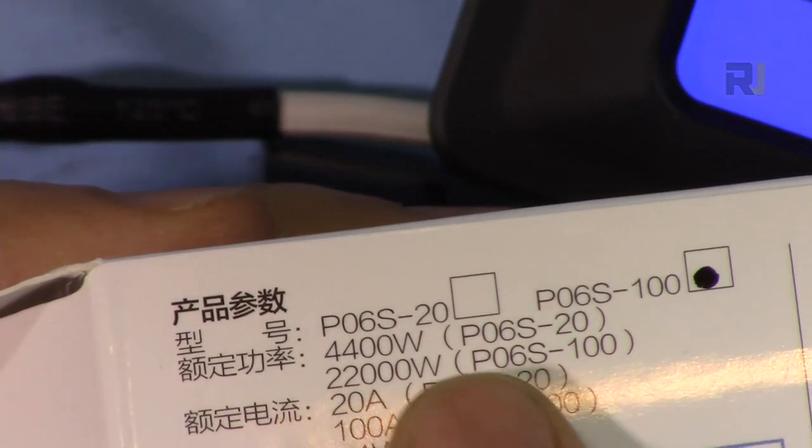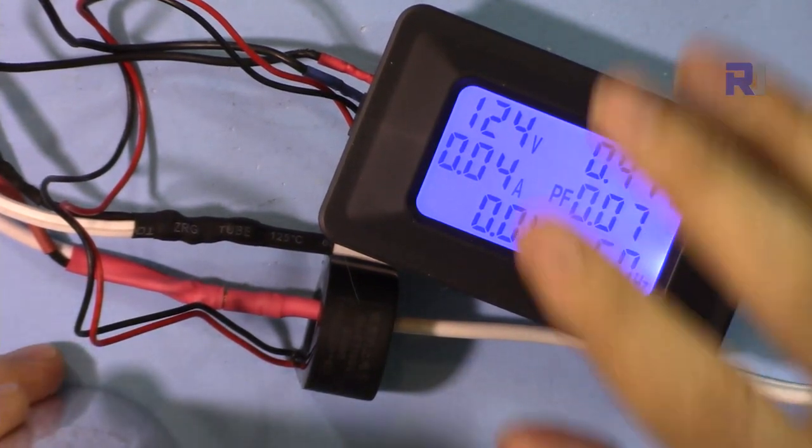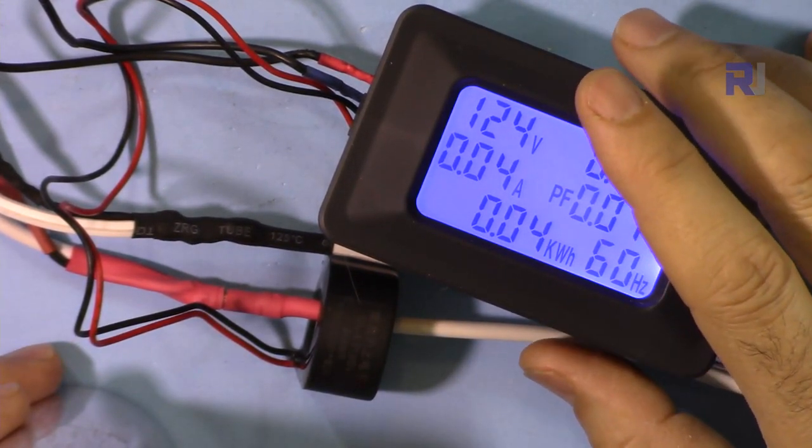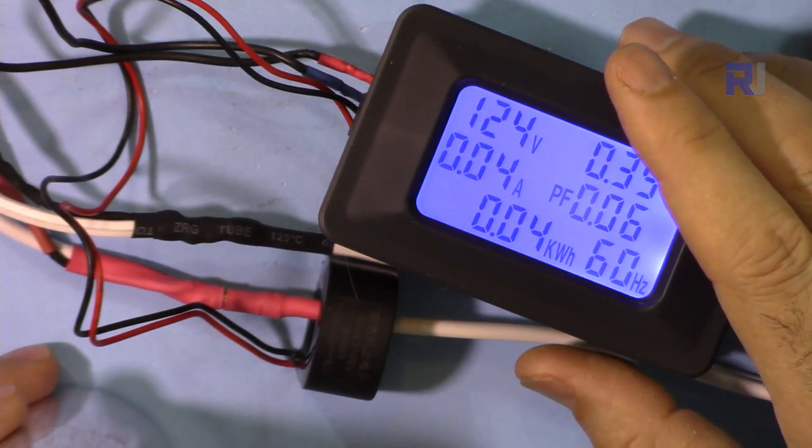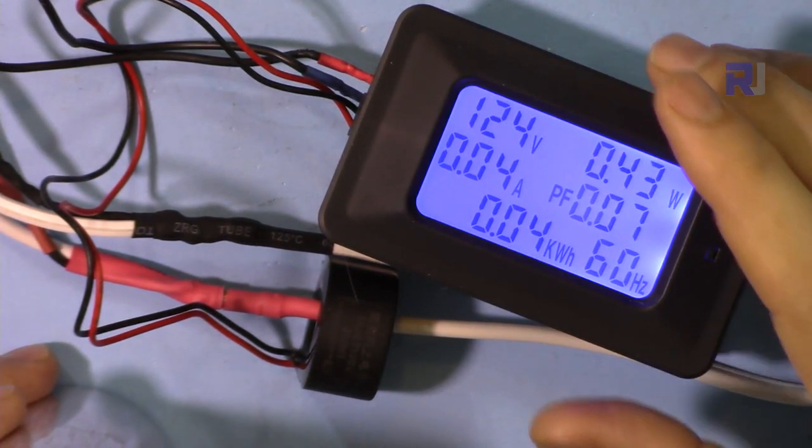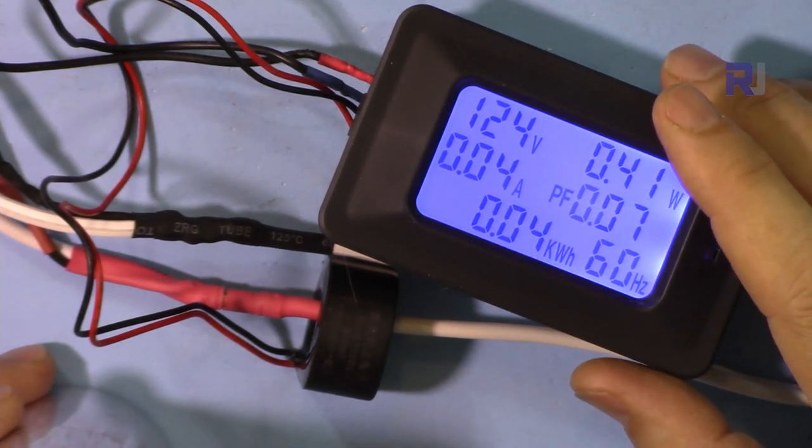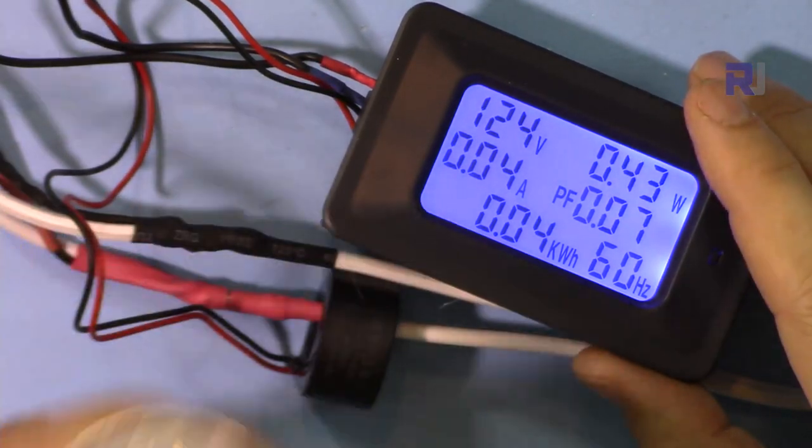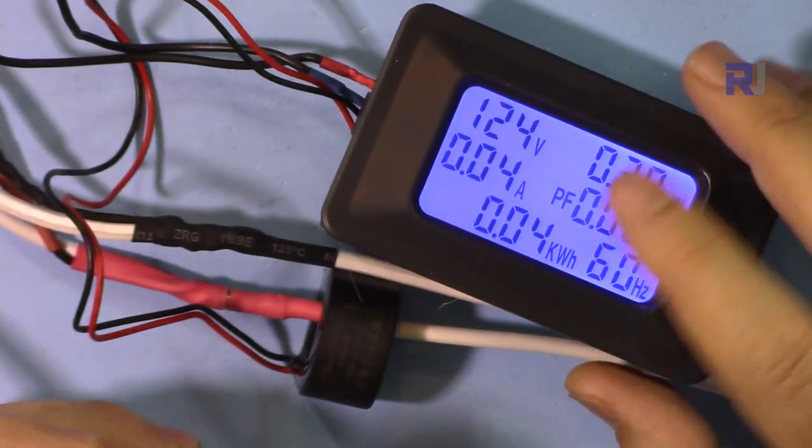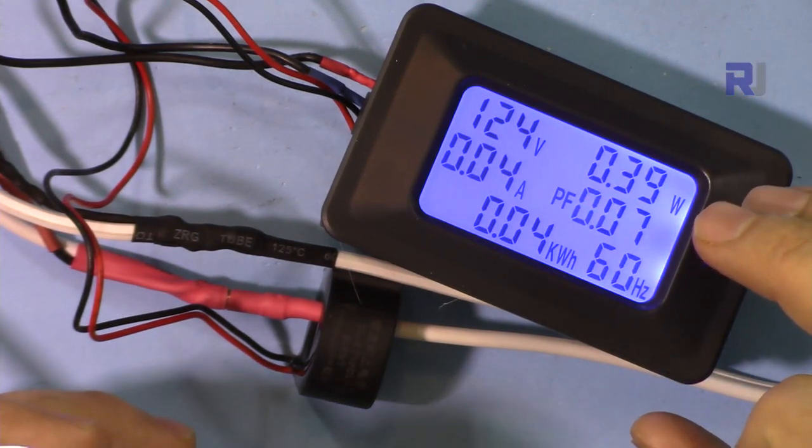The model for this one is P06F100, this is a 100 ampere version, and there's also a P06F20 which is 20 ampere version. I'm going to measure two different devices. One is pure resistive load, a toaster, and also a heat gun which has a motor inductive load and the heating element which is resistive. Then I'm going to connect a capacitor in parallel with the load to see the reactive load and how this one handles it.